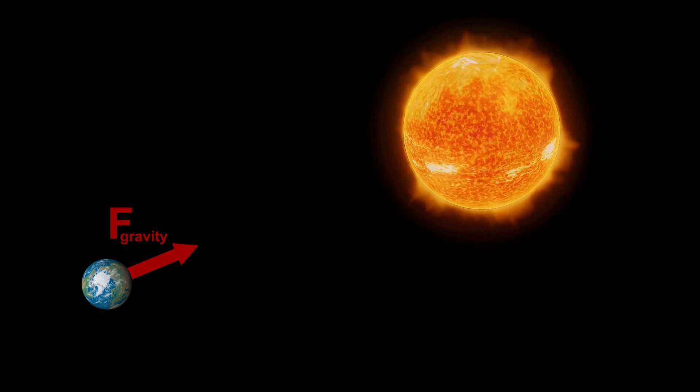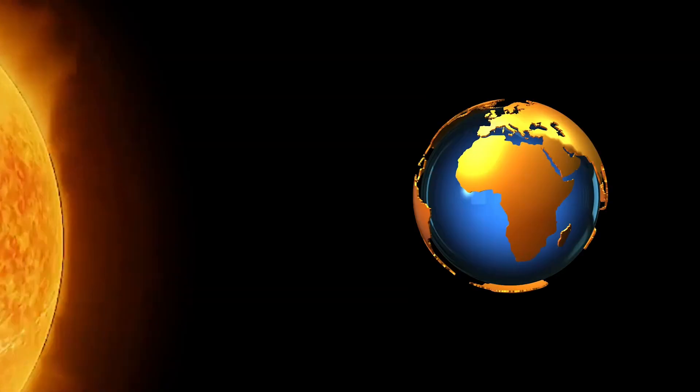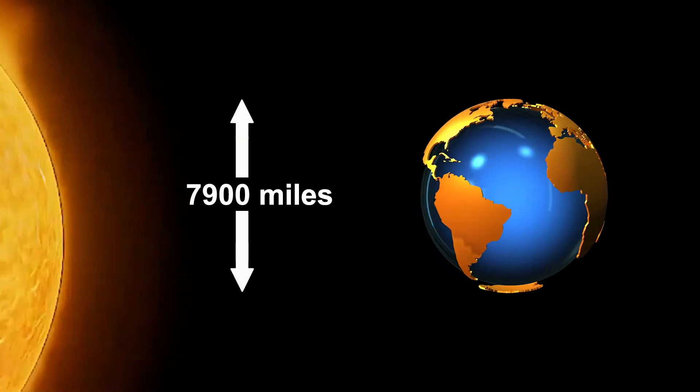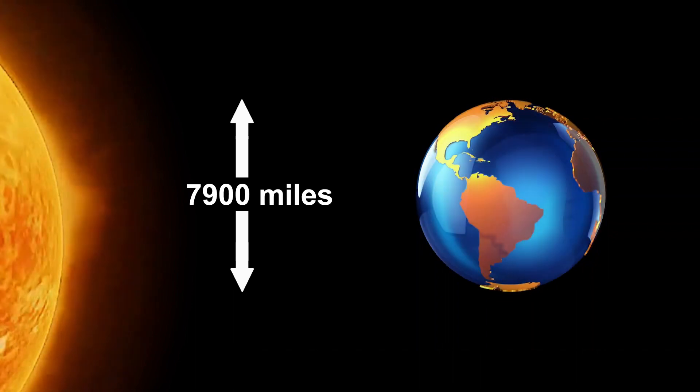Because the Earth orbits around the Sun once every year, it also has a centrifugal force. The Earth has a diameter from the North Pole to the South Pole of 7,900 miles.